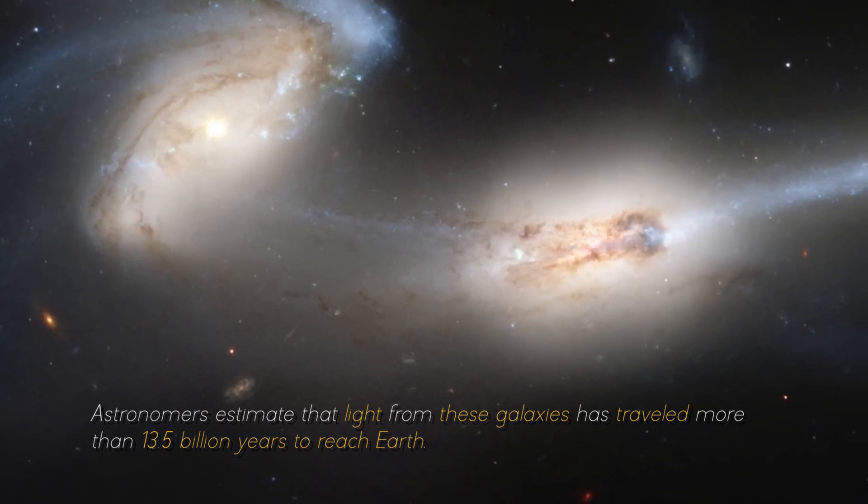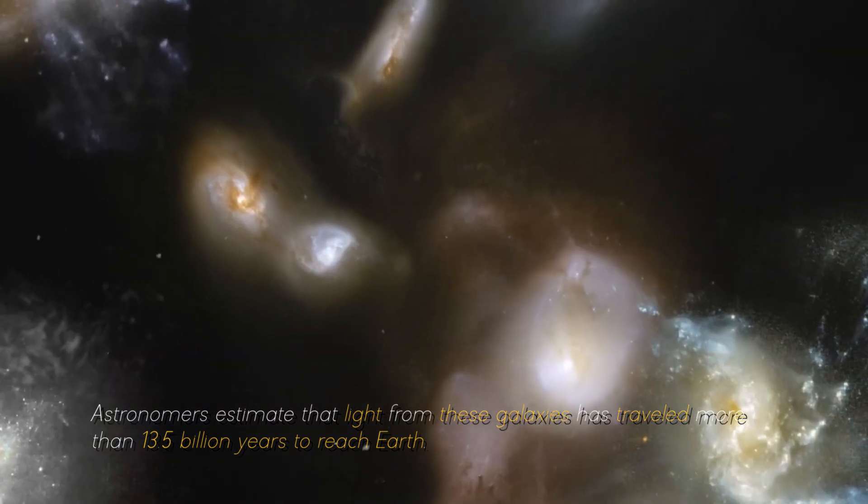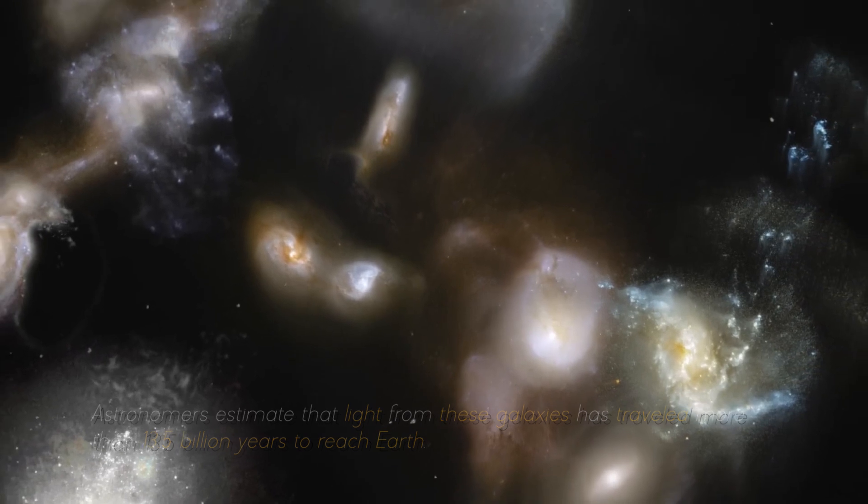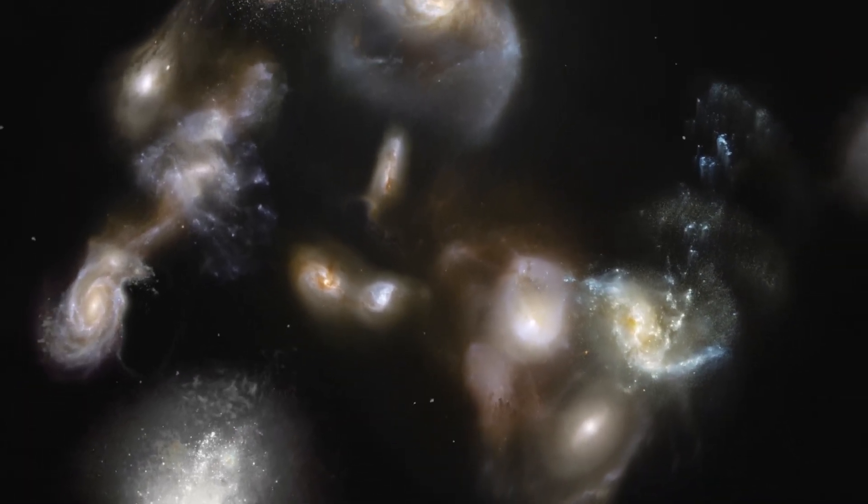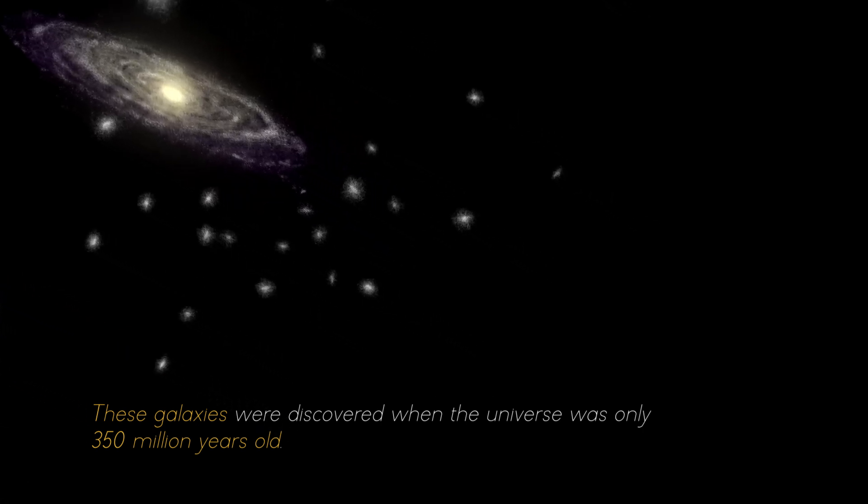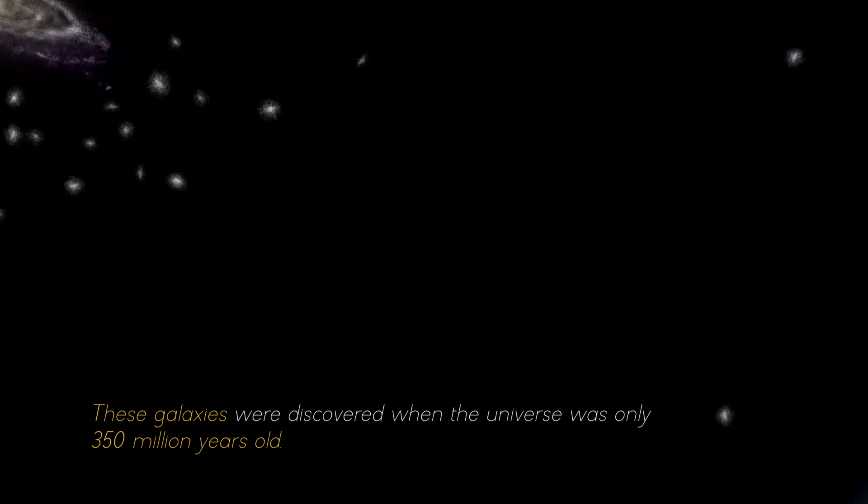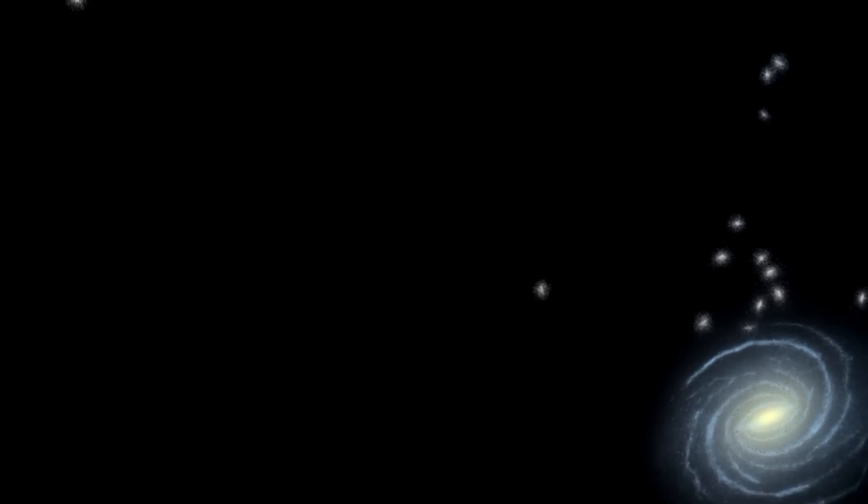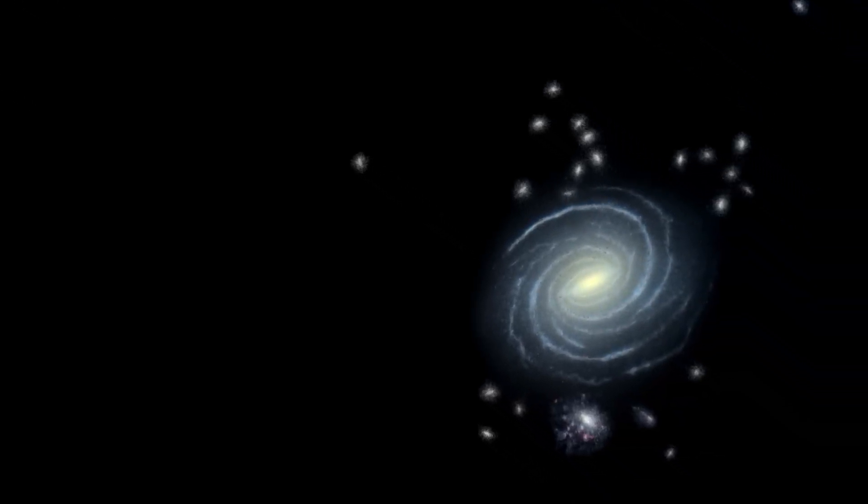Astronomers estimate that light from these galaxies has traveled more than 13.5 billion years to reach Earth, giving us a glimpse into the distant past of the universe. These galaxies were discovered when the universe was only 350 million years old, shedding light on how quickly the first generations of galaxies emerged.